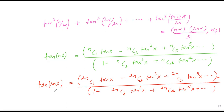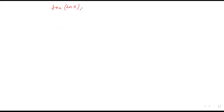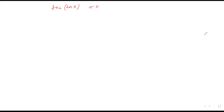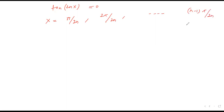अब अगर मैं यह कहूं कि tan(2Nx) कौन-कौन से x पे 0 होगा — तो अगर मैं tan(2Nx) को 0 करूँ। एक बात मैंने पिछले वीडियो में add कर दी है — n > 1 है। तो यह 0 कब होगा जब x की value: π/2N, 2π/2N, ऐसे चलते जाएंगे, x की value (n−1)π/2N तक। तो यह सारे इसके roots होंगे, solutions होंगे।